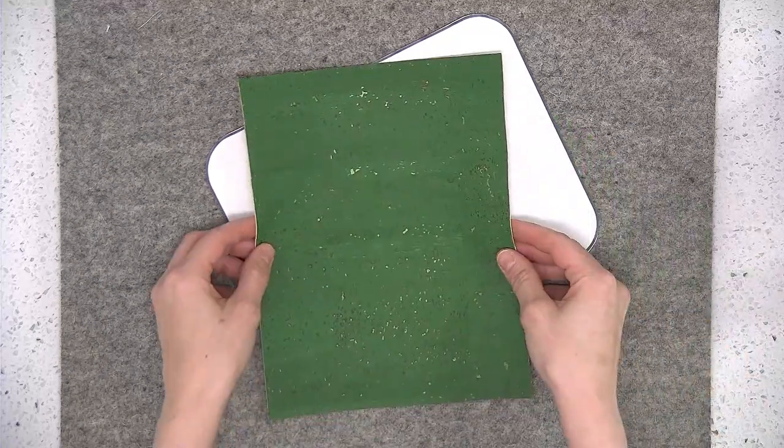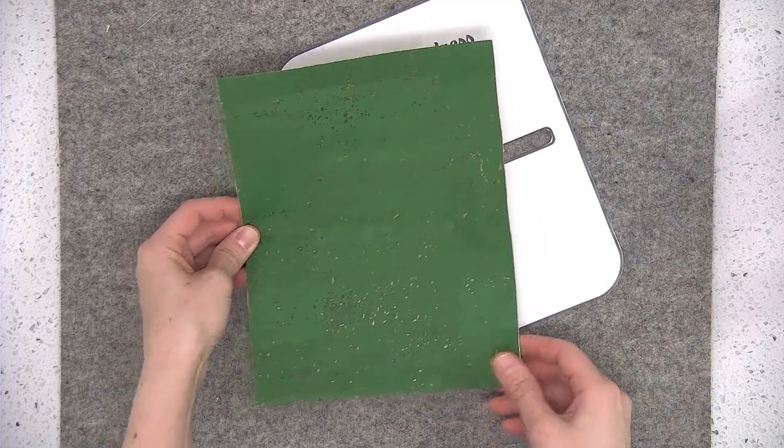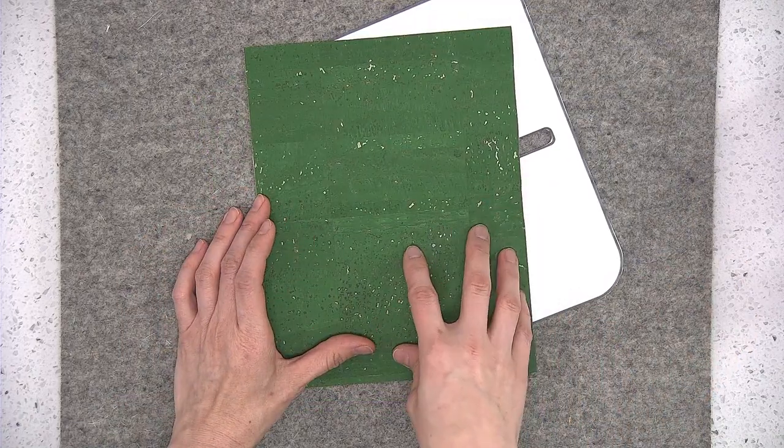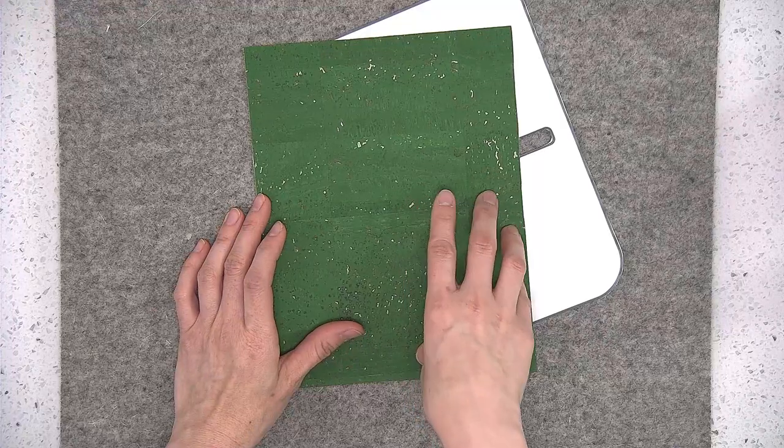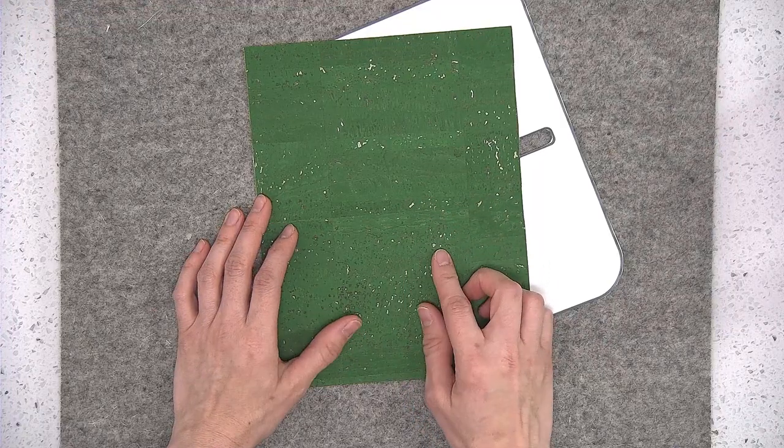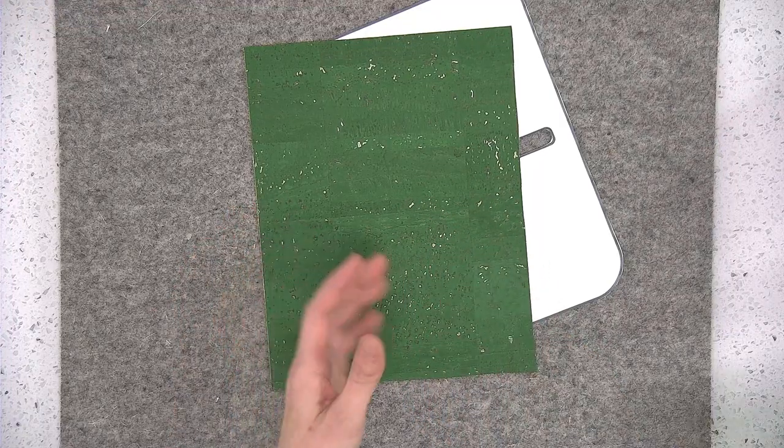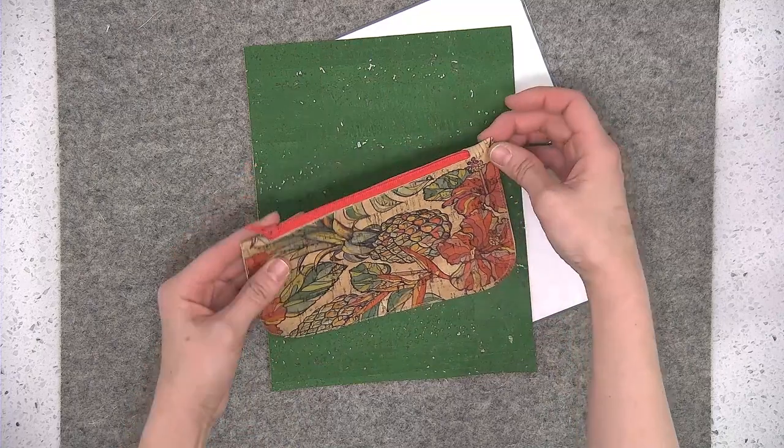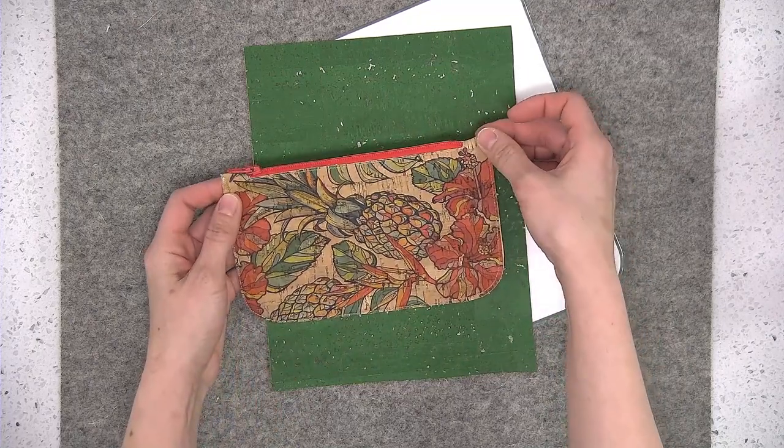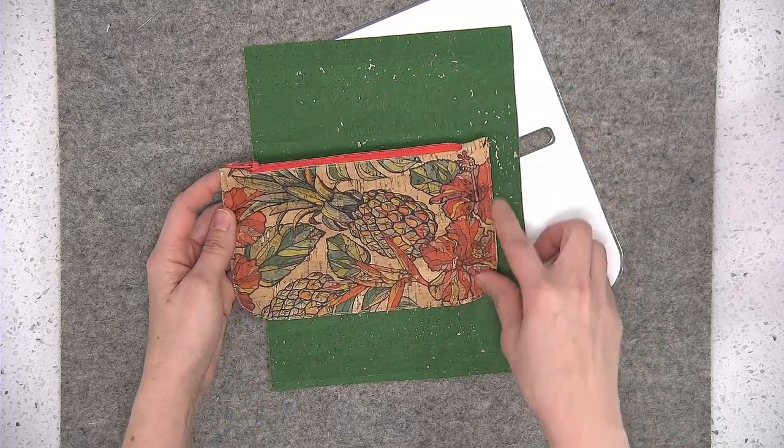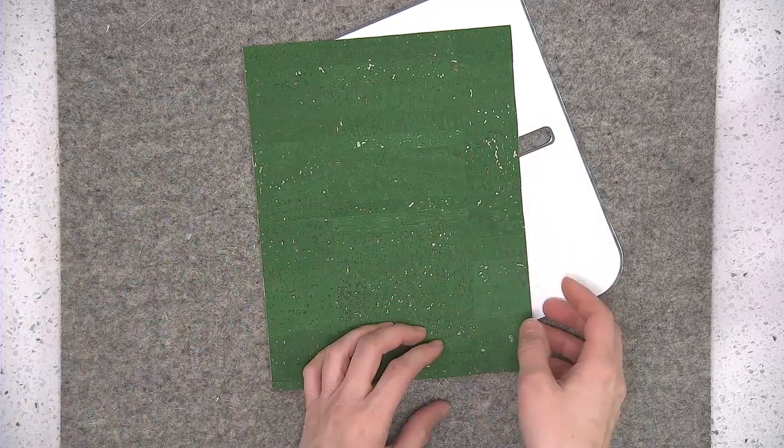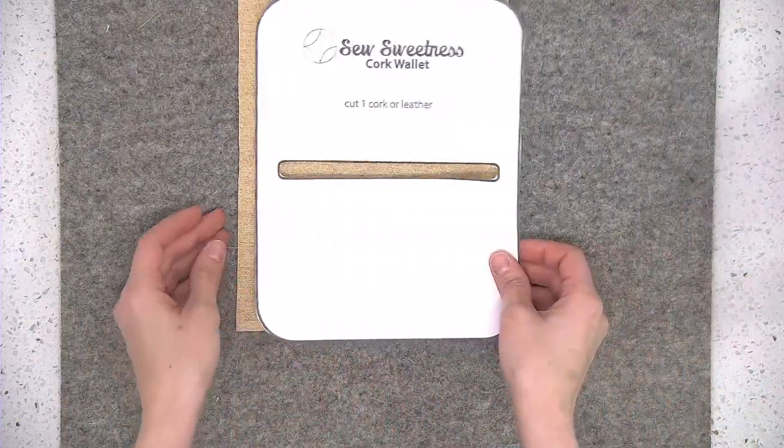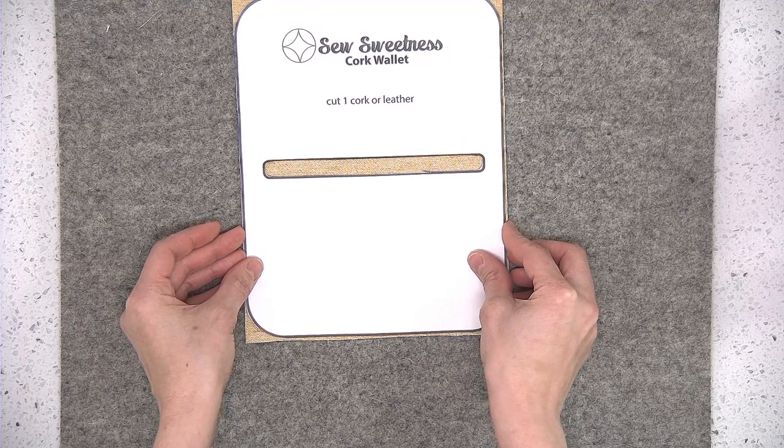I'm going to use this great grass green color of cork fabric. I highly recommend making this project out of a solid color of cork rather than patterned cork like straw or fennel. The reason is that the top corners of this pouch are kind of sharp and if you use one of the textured corks you might get some cracking in the top corners. So I'm going to lay the pattern piece on the wrong side of the fabric.